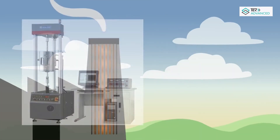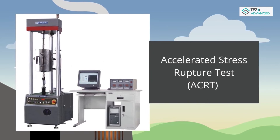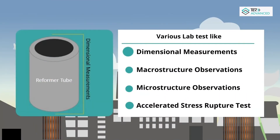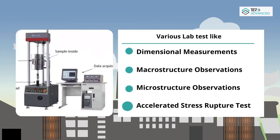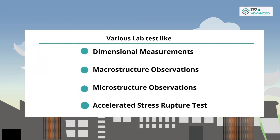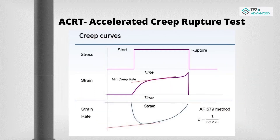When parametric creep rupture data is absent, an accelerated stress rupture test is adopted for deriving life assessment. Lab tests including dimensional measurements, macrostructure observations, microstructure observations, and accelerated stress rupture tests are considered for destructive testing. For an accelerated creep rupture test, a tensile bar is taken on which load and temperature are applied, and strain is plotted with time. This test usually ends with rupture within 100 to 1000 hours, and a creep curve is obtained determining the minimum creep strain rate.